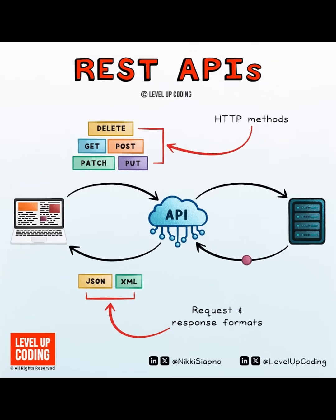REST APIs use something called HTTP methods to tell the server what to do. Think of them like action verbs: GET — give me the data; POST — here's new data to add; PUT — replace this data completely; PATCH — just update part of it; DELETE — remove this data. Each method has a job, and together they make your app interactive and dynamic.